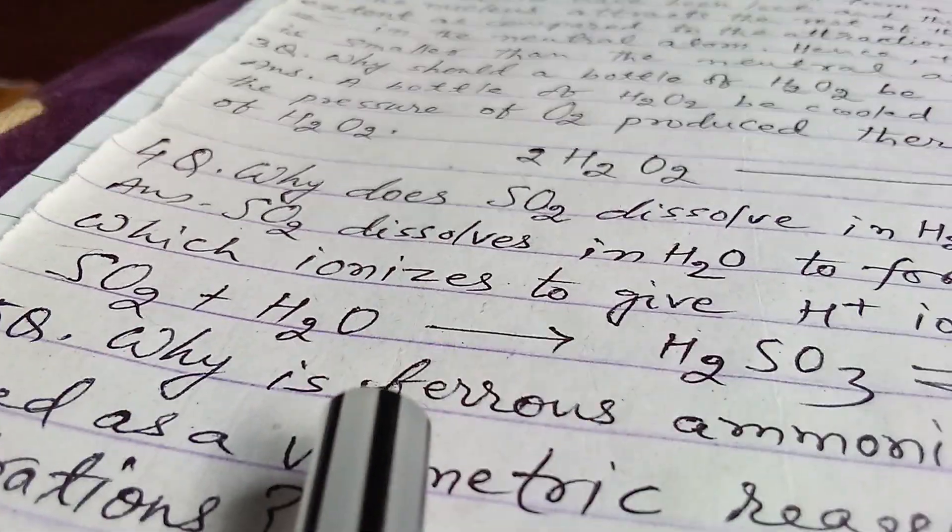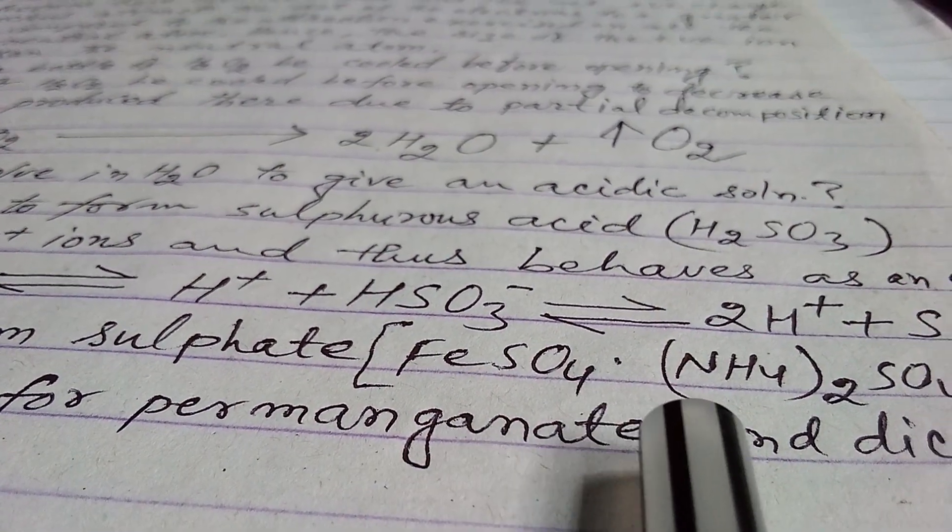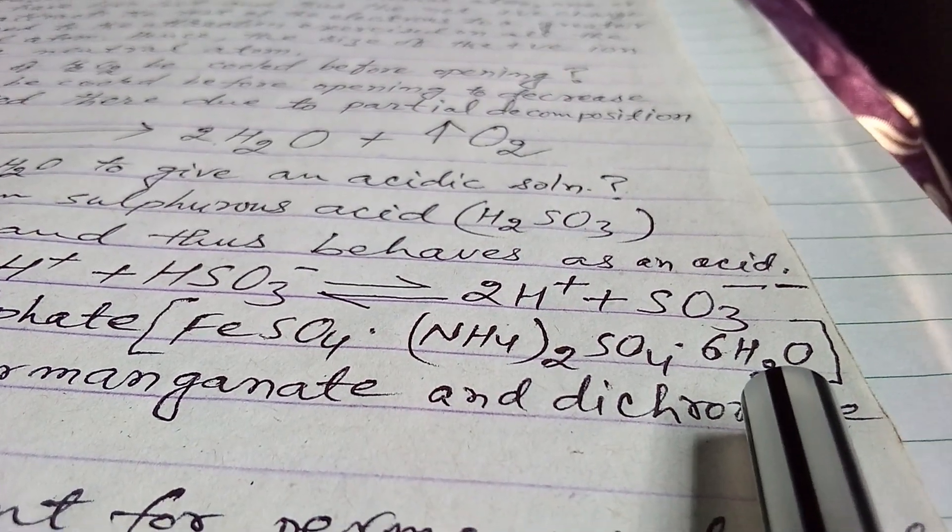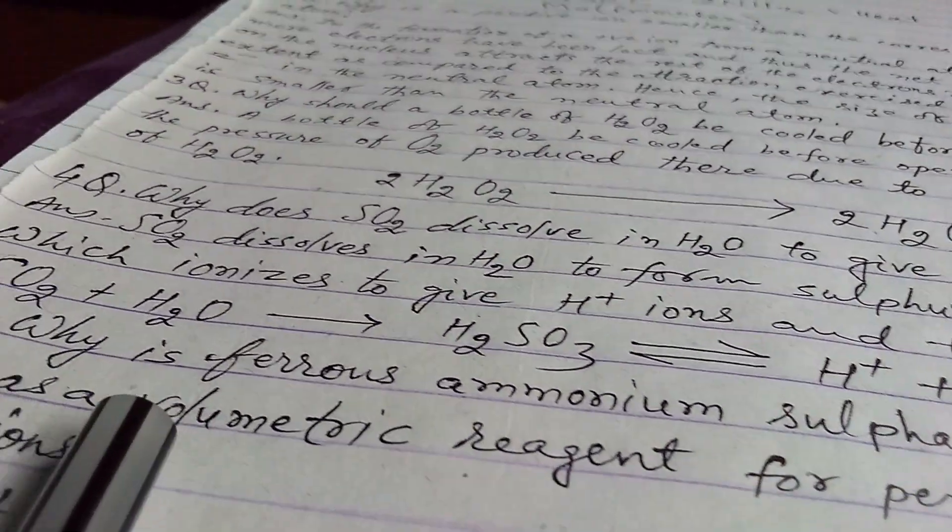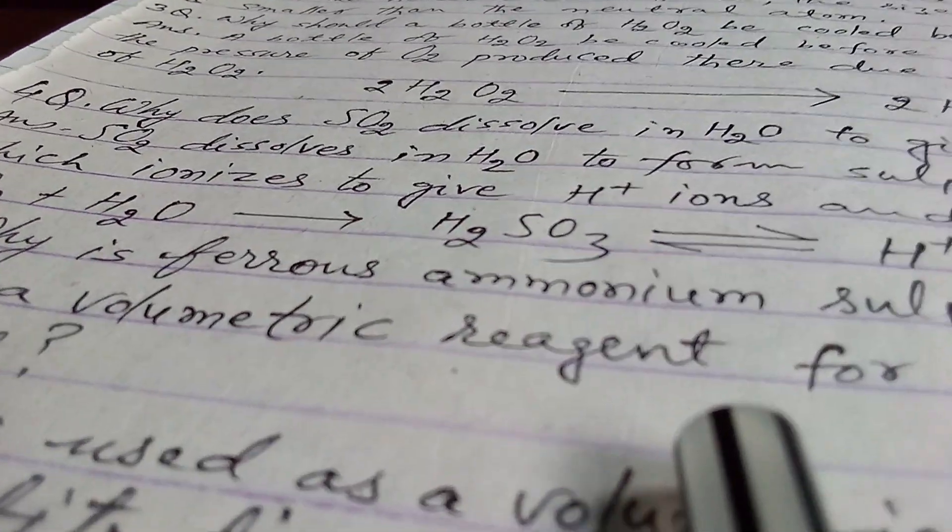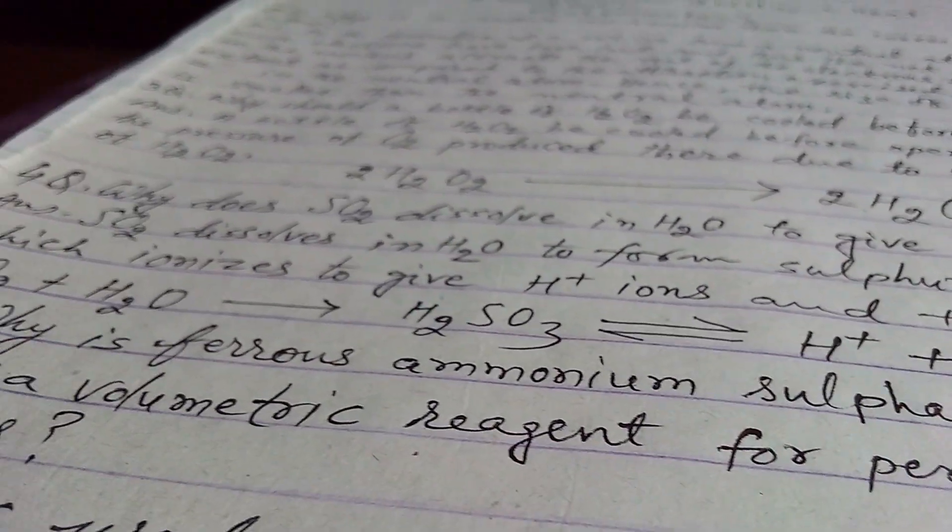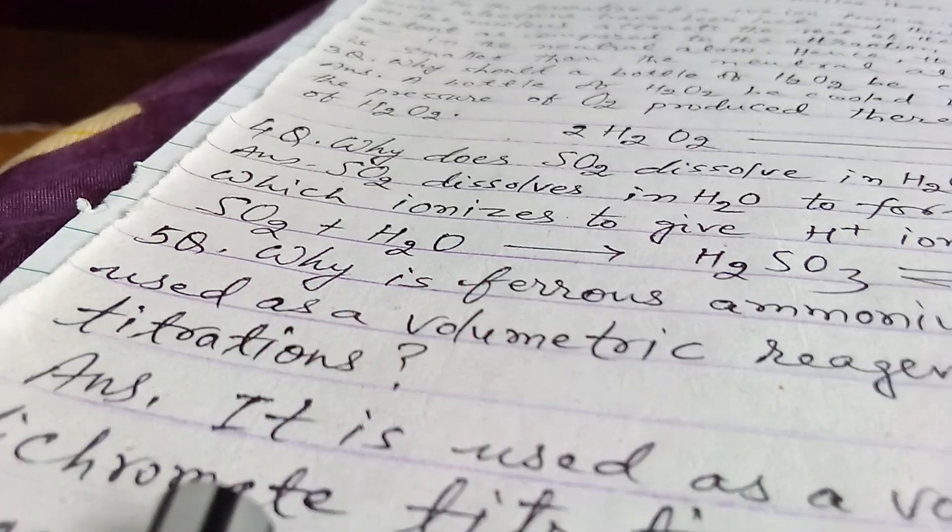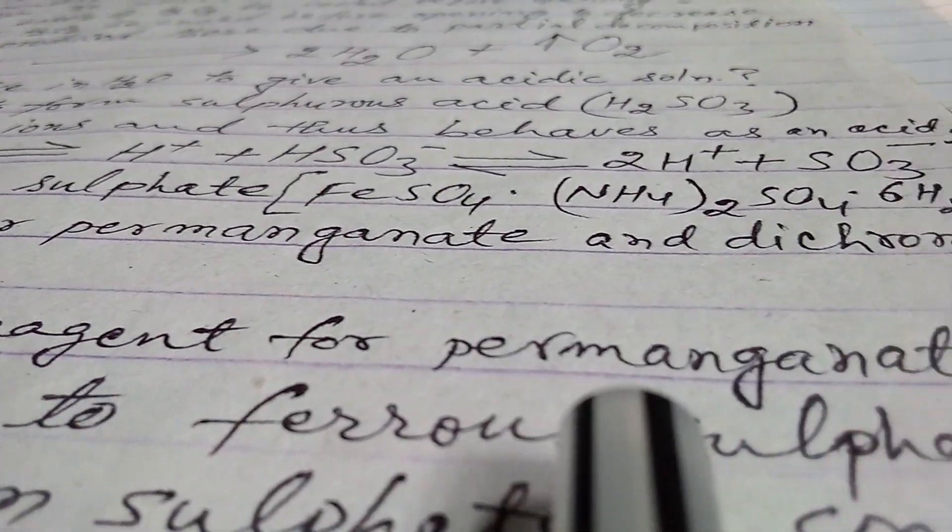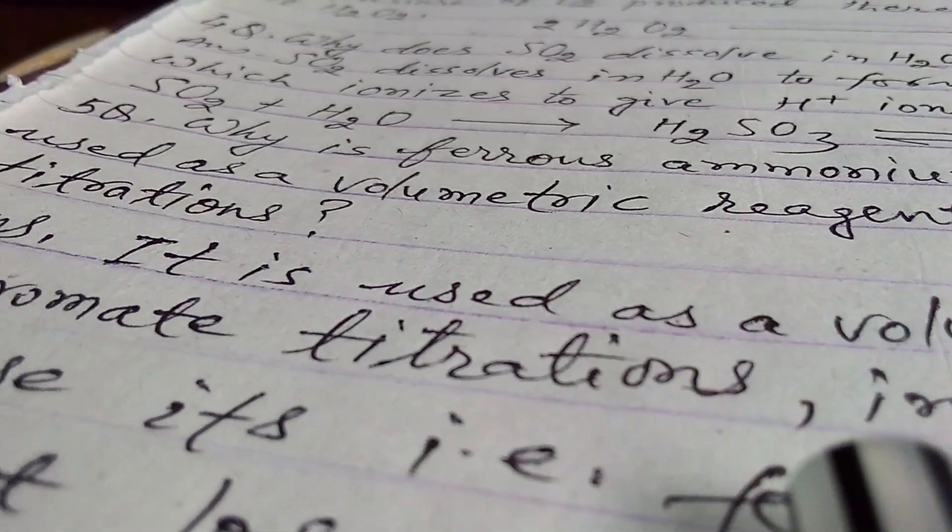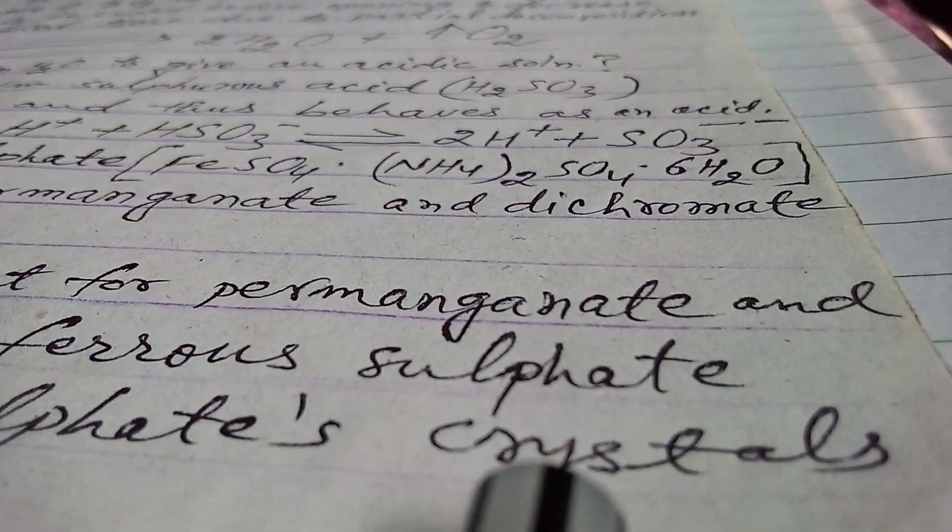So the fifth question is: why is ferrous ammonium sulfate whose formula is FeSO4.H2SO4, and six molecules of water is also present, that means water of crystallization is six, used as a volumetric reagent for permanganate and dichromate titrations?